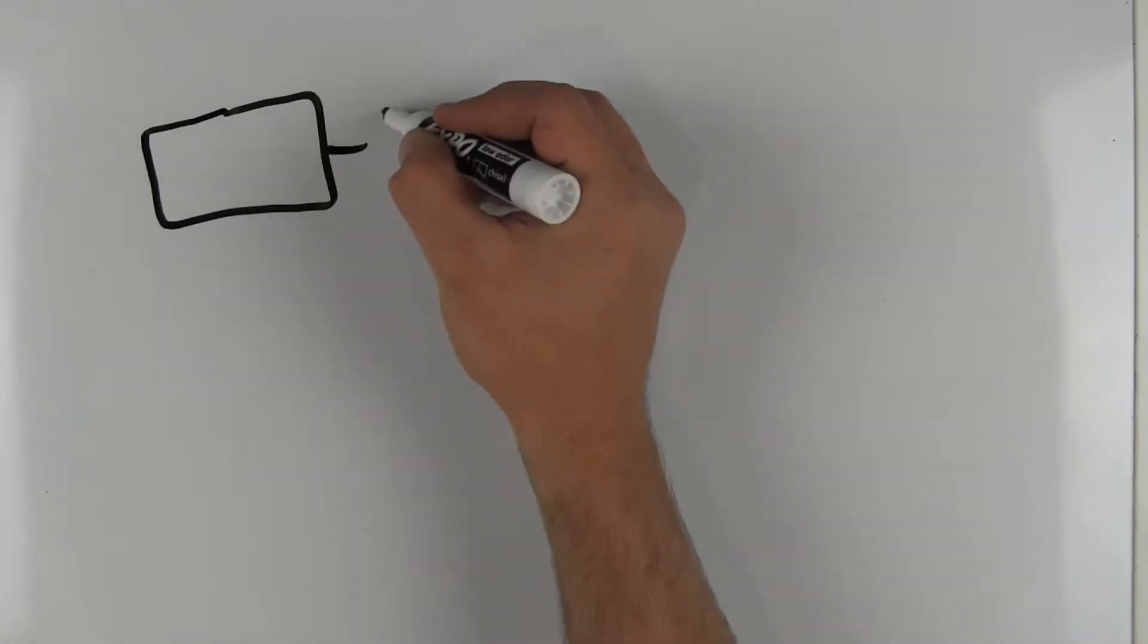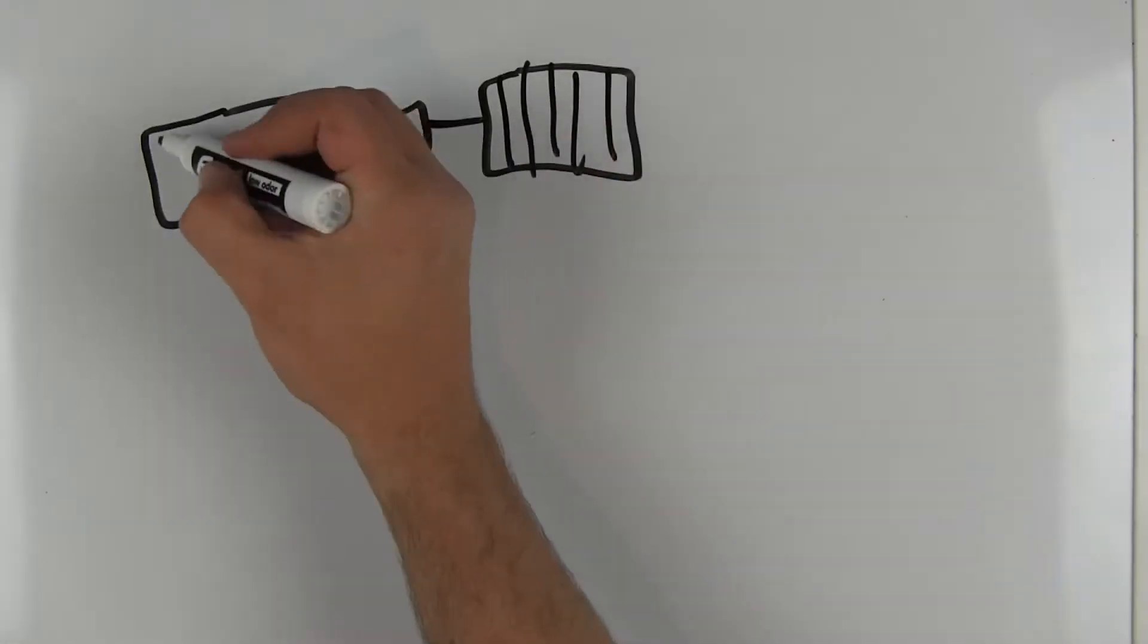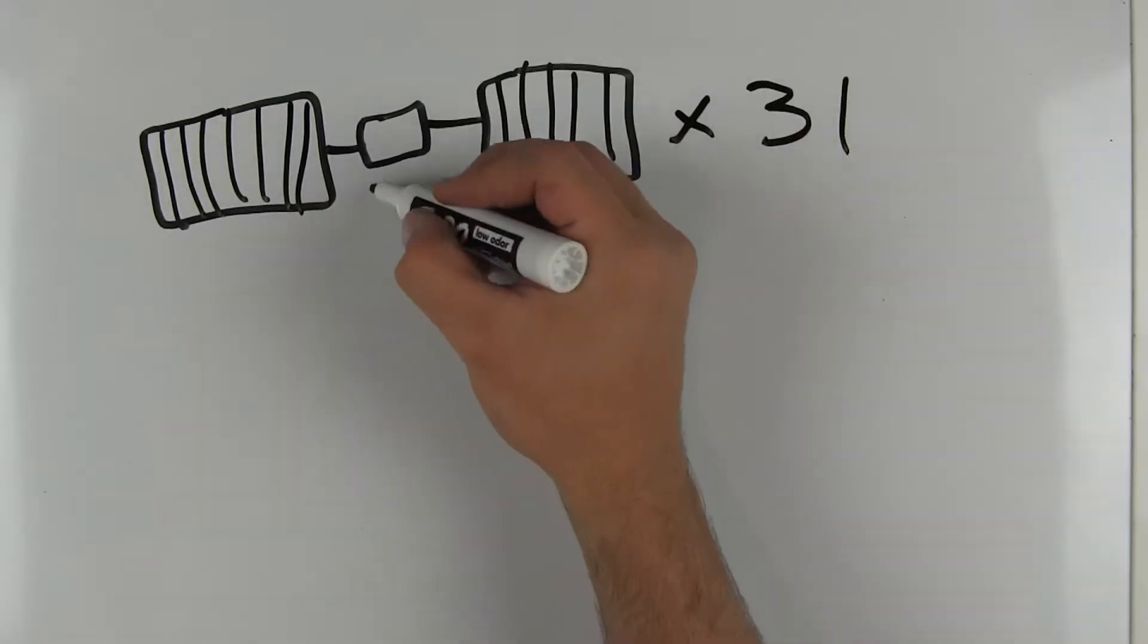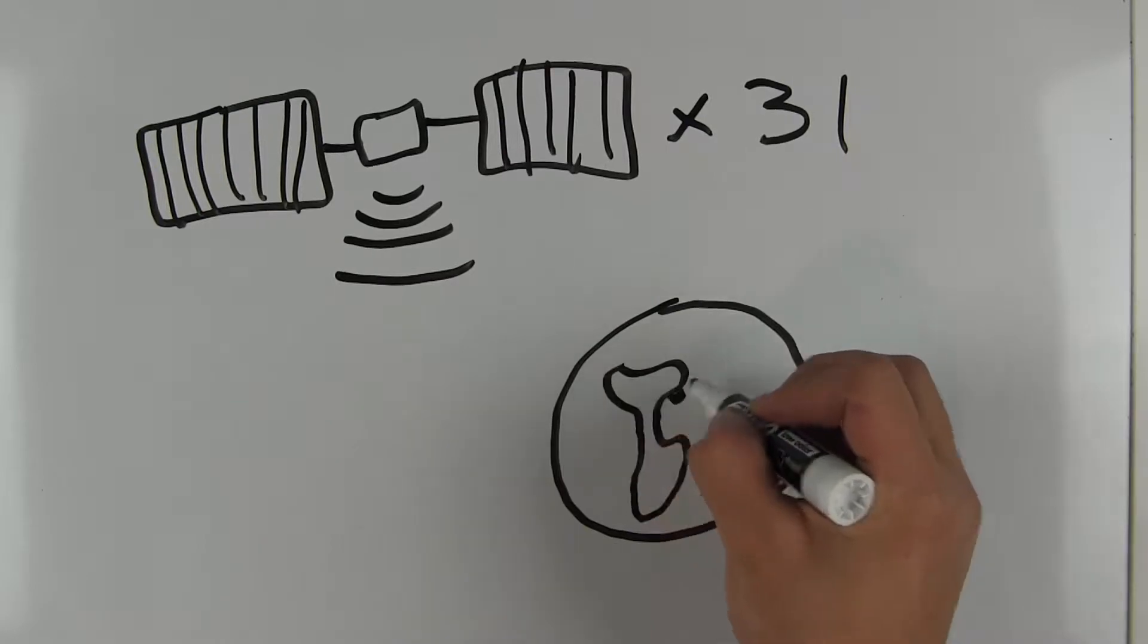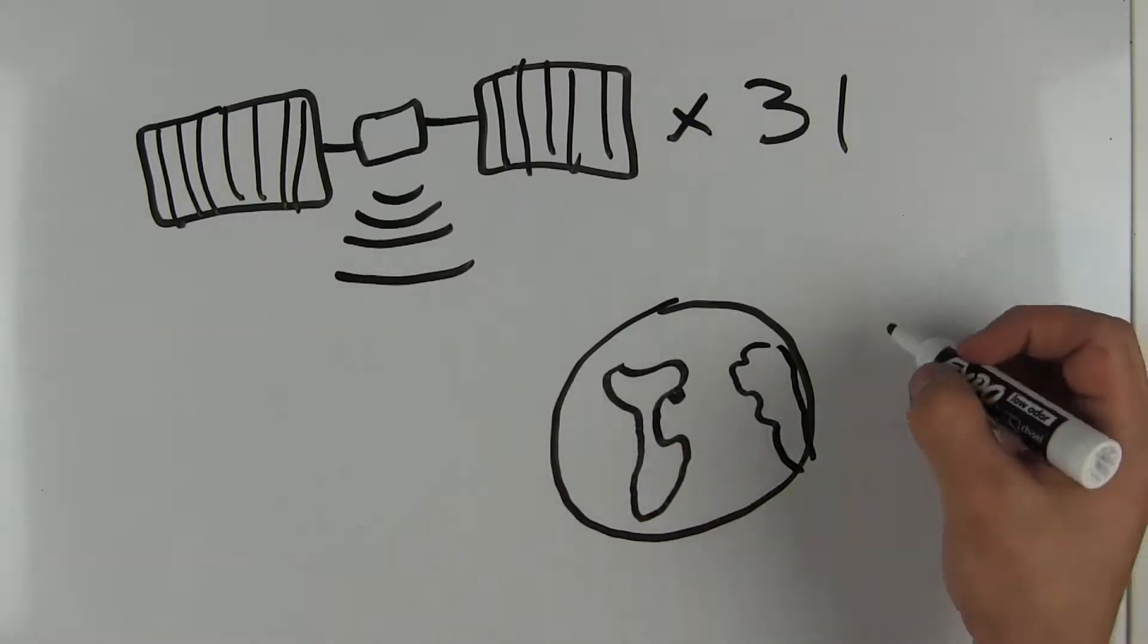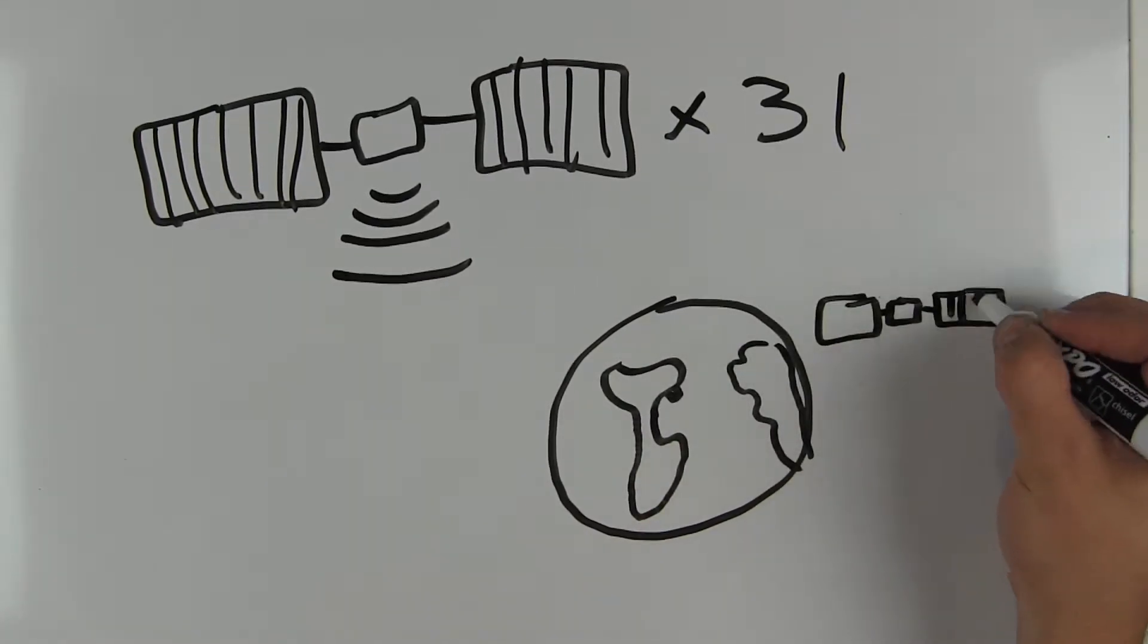GPS is a system that's built around 31 satellites that orbit around the Earth. Each satellite is positioned at a 55 degree angle to the equator and orbits about 20,000 kilometers from the Earth. This means that each satellite orbits two times per day.